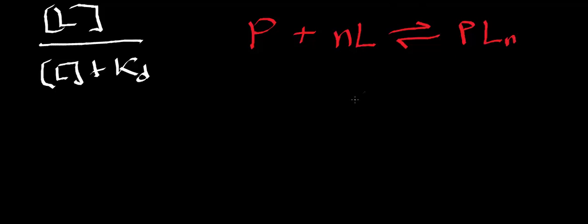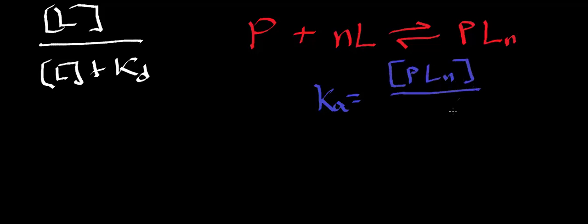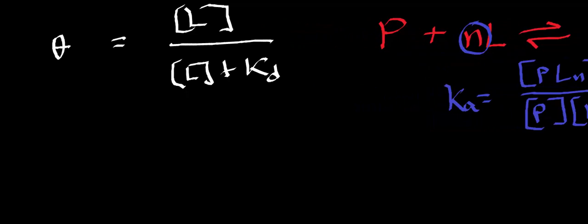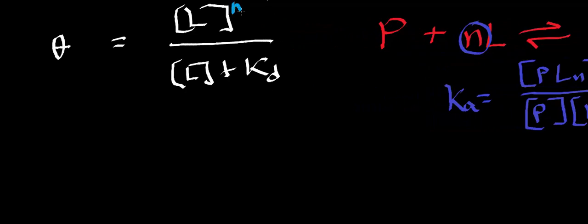If we define an equilibrium constant for this equation, we take the concentration of the products divided by the concentration of the reactants. Recall that when you have a coefficient in front of a reactant or product, it becomes an exponent in the equilibrium expression. So when we apply this equilibrium expression to our theta equation, we also have to include these exponents on the ligand — the ligand concentrations will have an N exponent on them.